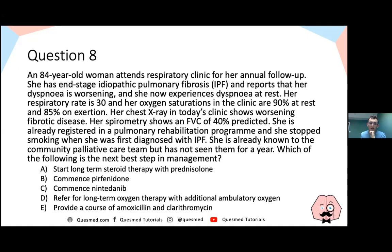Question eight: An 84-year-old woman attends respiratory clinic for annual follow-up. She has end-stage idiopathic pulmonary fibrosis and reports worsening dyspnea now at rest. Respiratory rate 30, oxygen saturations 90% at rest and 85% on exertion. Chest X-ray shows worsening fibrotic disease. Spirometry shows FVC of 40% predicted. She is already in a pulmonary rehab programme, has stopped smoking, and is known to the community palliative care team. Which of the following is the next best step in her management?